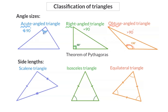We can also classify a triangle according to side lengths. Our first triangle has three different side lengths — this is called a scalene triangle. A scalene triangle has no extra properties.